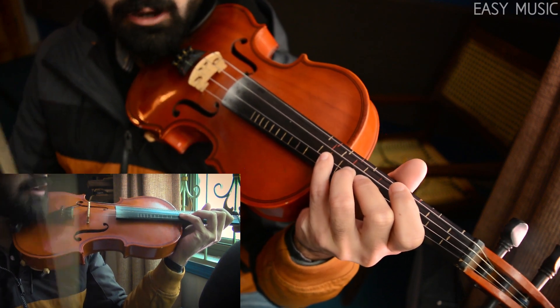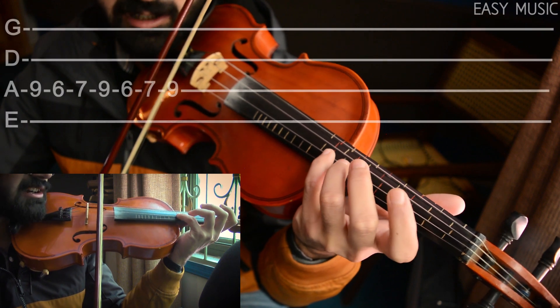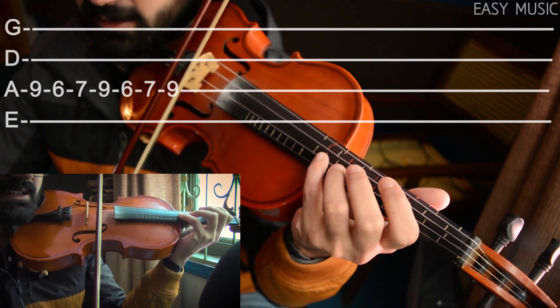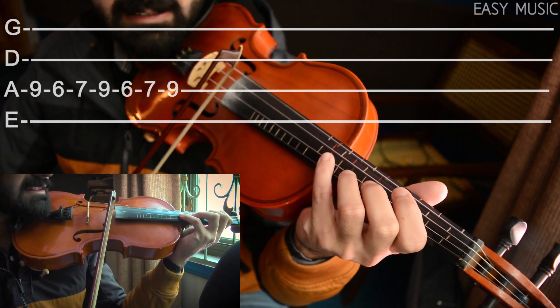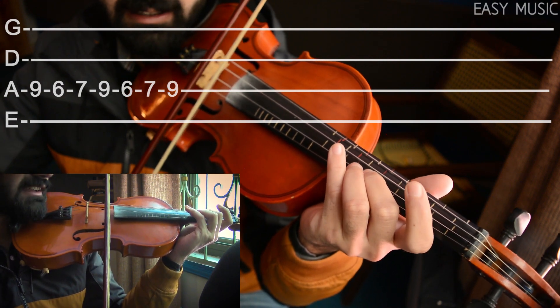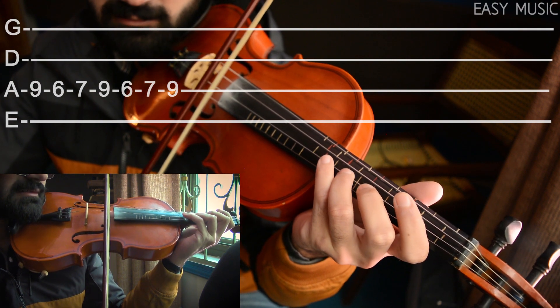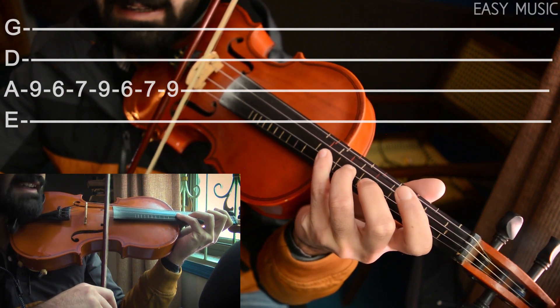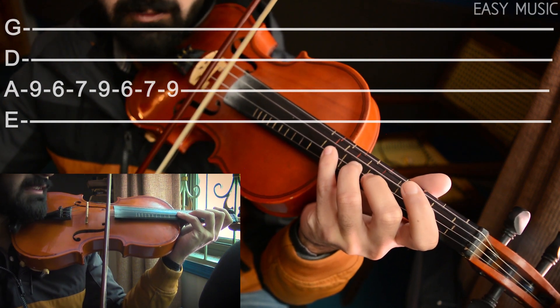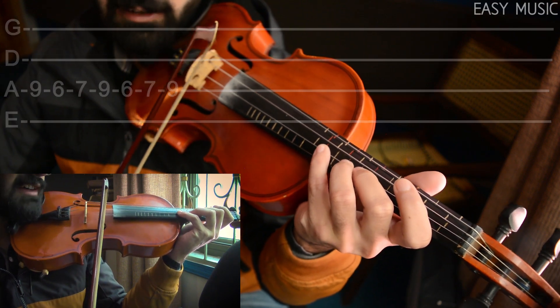So how you're going to play this one is you have to use your pinky finger first on the 9th fret on A string and then 6th with your 2nd finger and then 3rd finger on 7th. So now you have to switch between them like this.